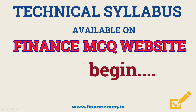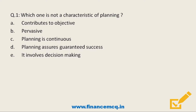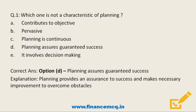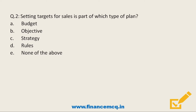The first question: which one is NOT a characteristic of planning? Option A: contributes to objective. Option B: pervasive. Option C: planning is continuous. Option D: planning assures guaranteed success. Option E: it involves decision making. Option D is incorrect — planning gives an assurance towards success and makes necessary improvements to overcome obstacles, but it nowhere guarantees success.